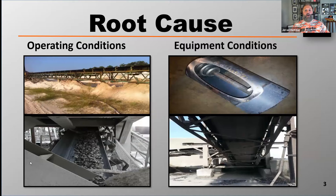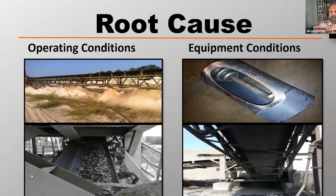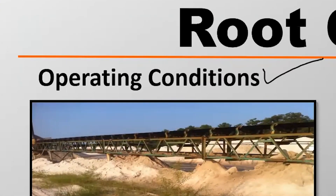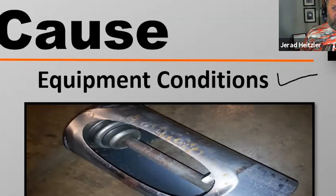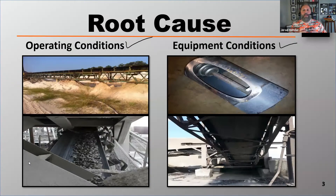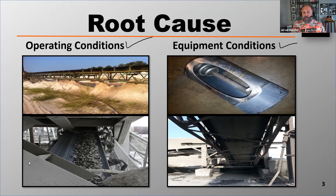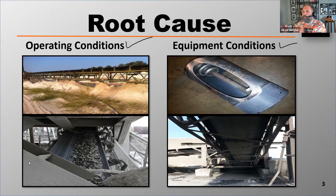There are reasons why a belt will mistrack — it doesn't just mistrack naturally. Typically, there are two categories of root causes: operating conditions and equipment conditions. Operating conditions would be things you're doing that are causing the belt to mistrack. Equipment conditions I would define as things you have that are causing the belt to mistrack.